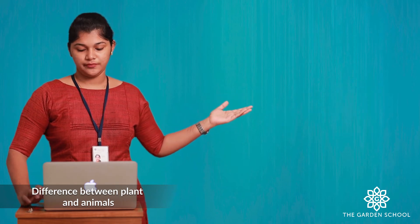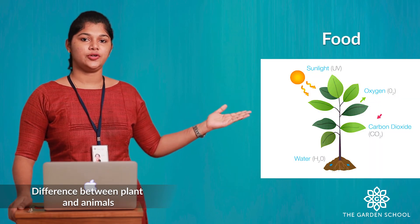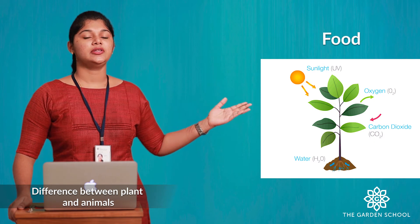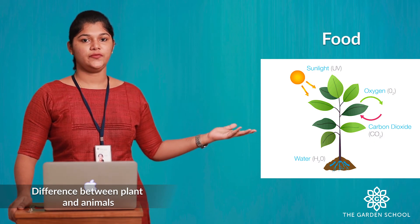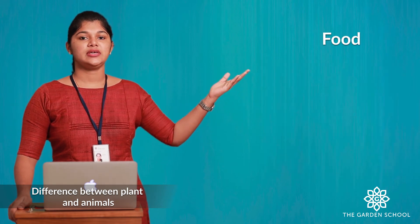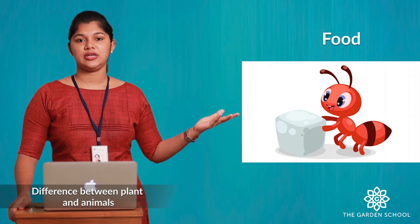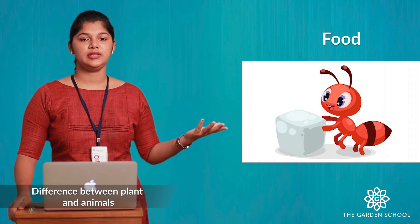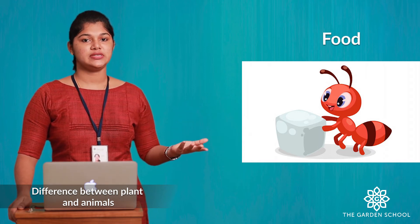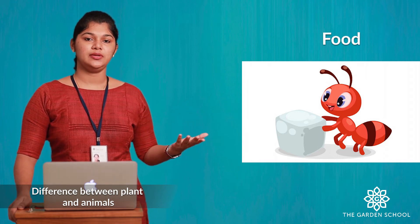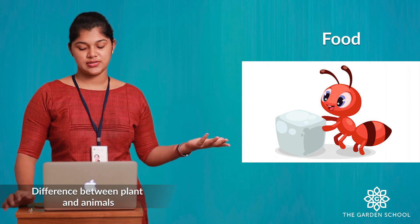The second difference is food. Plants can make their own food. But animals cannot make their own food — they always depend on other animals or plants.